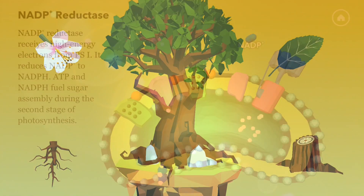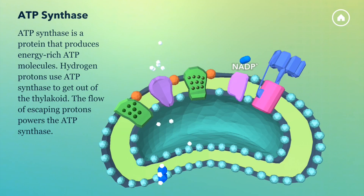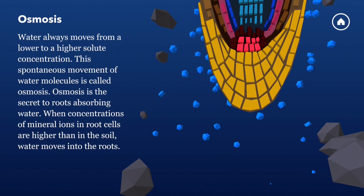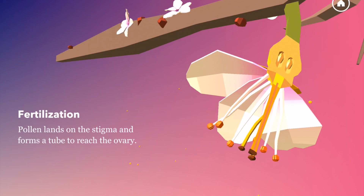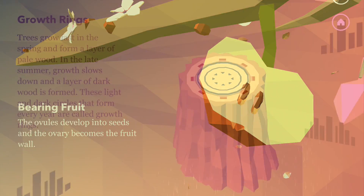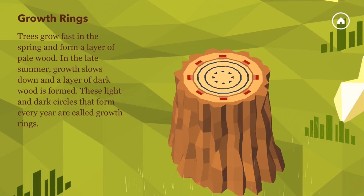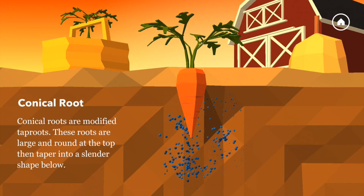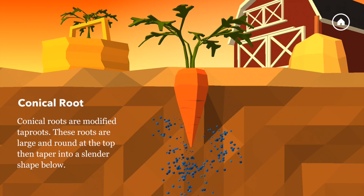In the Naamu world, you can play with the cell or other parts of plants, like roots or flowers turning into fruits. Download the Naamu app and have loads of fun exploring wonders of plant life.